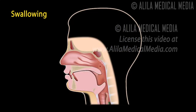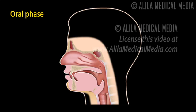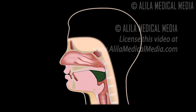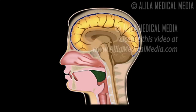Swallowing consists of three phases. The first is the oral or buccal phase, which is the voluntary part of swallowing. The food is moistened with saliva and chewed, a food bolus is formed, and the tongue pushes it to the back of the throat, the pharynx. This process is under neural control of several areas of the cerebral cortex, including the motor cortex.